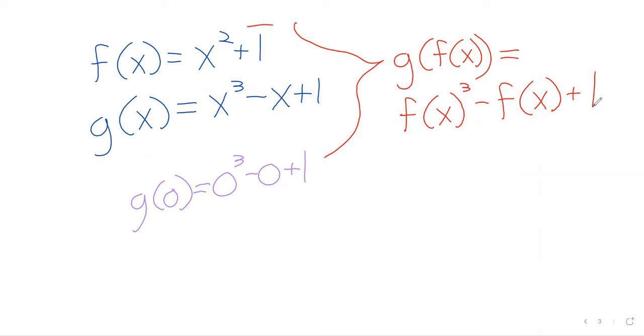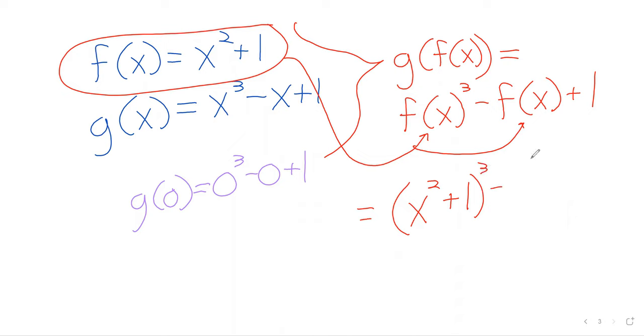Now there's always a step at the end of composition where you ask yourself, what is this function? I've got f(x) cubed minus f(x) plus 1. But what is f(x)? Well, it's x squared plus 1. So f(x) cubed is (x squared plus 1) cubed minus (x squared plus 1) plus 1.